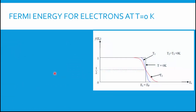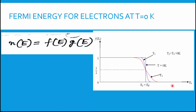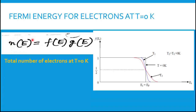Going back to the curve discussed in lecture 4: the y-axis is probability and x-axis is energy. At 0 Kelvin, all energy levels in the valence band are full (probability = 1) and all energy levels in the conduction band are empty (probability = 0). To find the total number of electrons, I integrate n(E) = f(E)·g(E) from 0 to infinity on both sides.